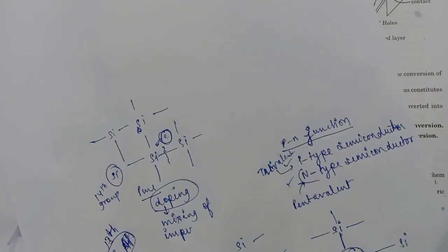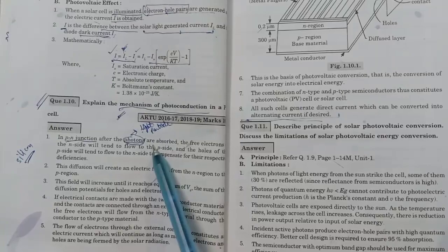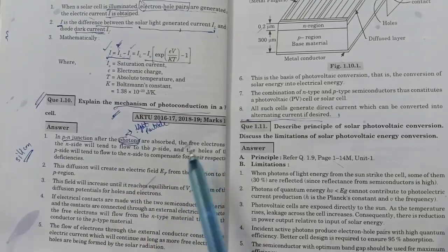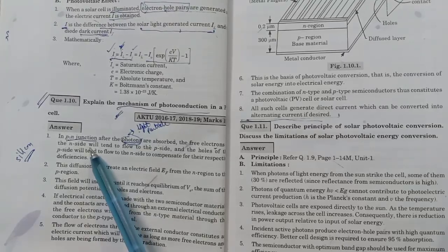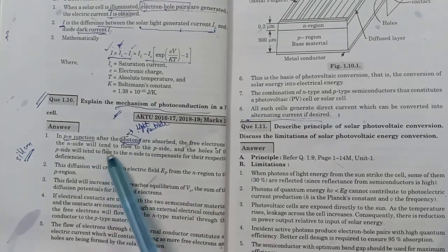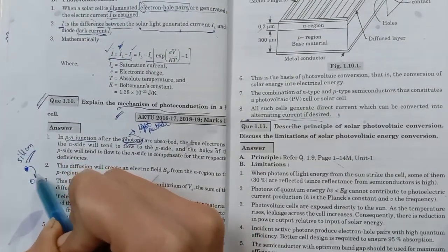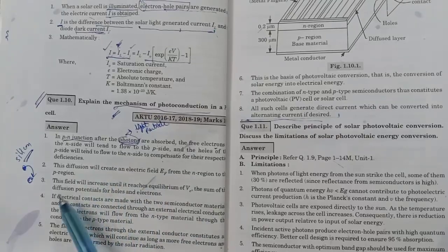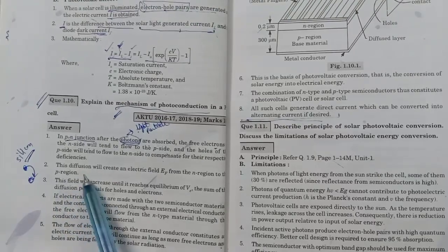So in a PN junction, when photons — light particles — are absorbed by the junction, energy comes to the PN junction. On the N-side there is arsenic with an extra electron. These electrons break free easily when energized by light. They tend to flow toward the P-side, where holes are present. Electrons jump into these holes. So movement starts from N-side to P-side to compensate for respective deficiencies. This diffusion creates an electric field.